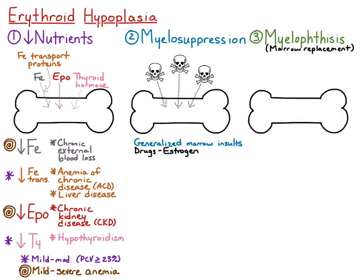Generalized marrow insults include various different drugs. Estrogen is commonly seen in animals being treated for urinary incontinence, or in animals that have tumors producing and secreting high levels of estrogen. A major side effect of most chemotherapeutic agents we use is myelosuppression, because these agents are used to destroy rapidly dividing cancer cells. But they aren't specific for cancer cells — they destroy any rapidly dividing cell, including hematopoietic precursors.